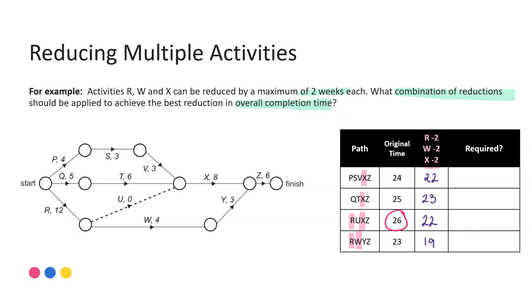Take everything that you were told you're allowed to do and reduce everything. And so when we've done that we can see our new critical path. Our new completion time is 23 and our new critical path is QTXZ with that X having been reduced.